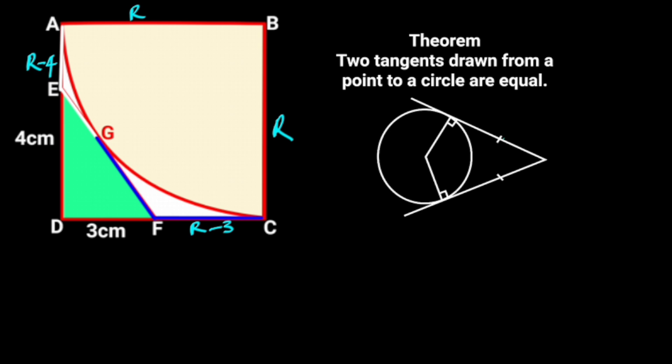Let's recall the circle theorem of tangents from external points. It states that two tangents drawn from a point to a circle are equal. In this figure, the two tangents are drawn from a point to the circle, and from the theorem, the two tangents are equal.